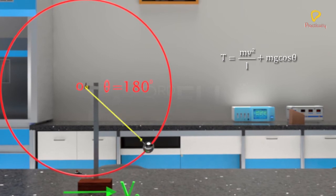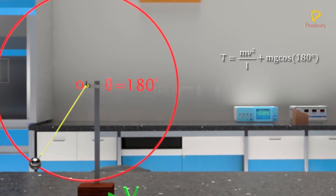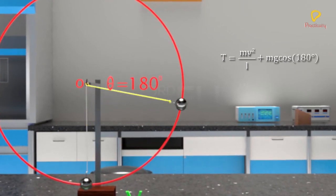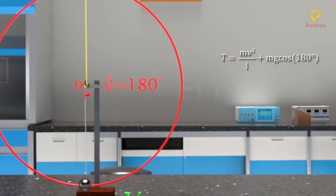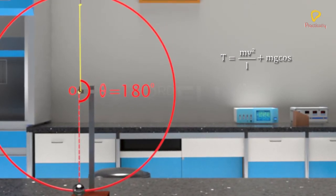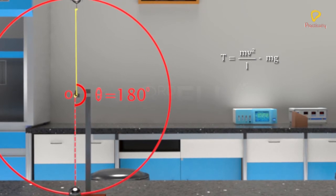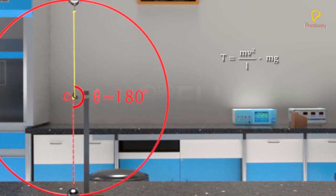At the highest point B, theta is 180 degrees. Substituting theta equal to 180 degrees in this equation, tension in the string is equal to Mv square by L minus Mg.